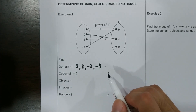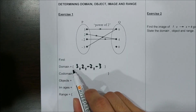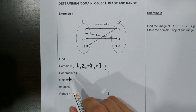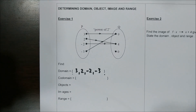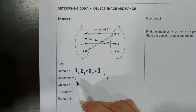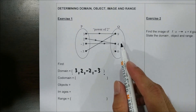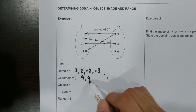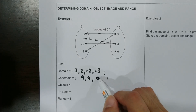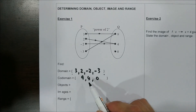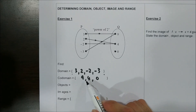Be careful here because you need to write this in set notation, because domain is a set. Then we need to find the codomain, which is set Q here. So you write 9, 4, and 0. Since this is a set, all the elements should be separated with commas.